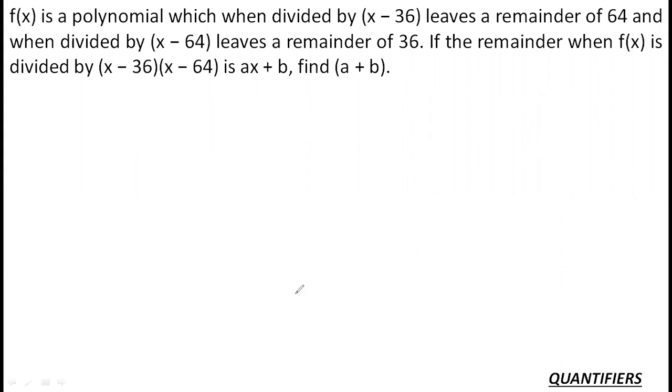This question we have done in my class on its basis. It says f(x) is a polynomial which when divided by x-36 leaves the remainder of 64 and when divided by x-64 leaves the remainder of 36. Before we solve this question, let's move back to number system. Dividend is equal to divisor into quotient plus remainder. This is the basic formula for this question.